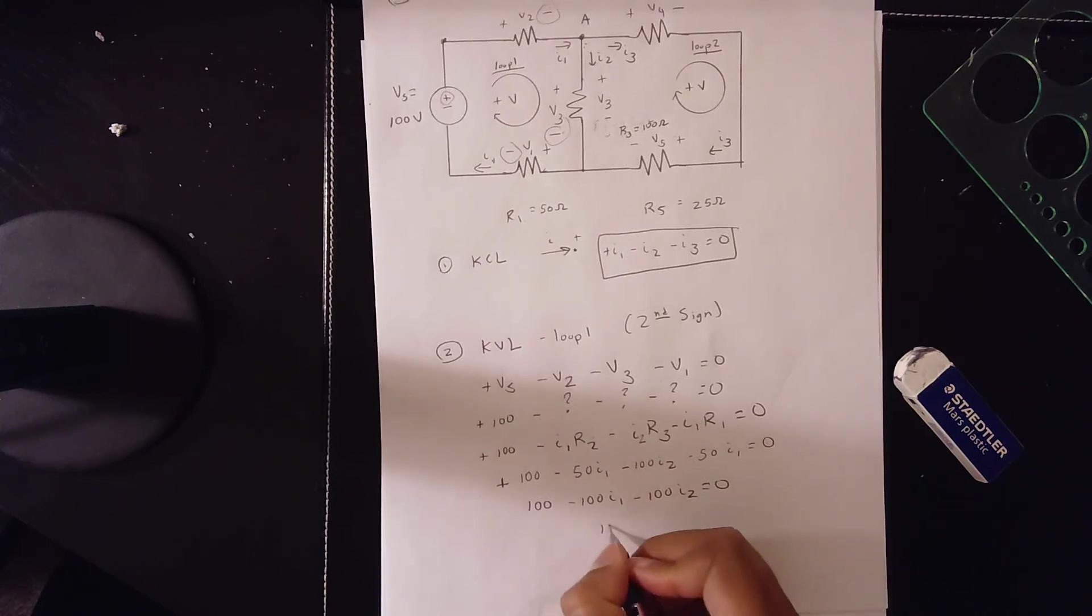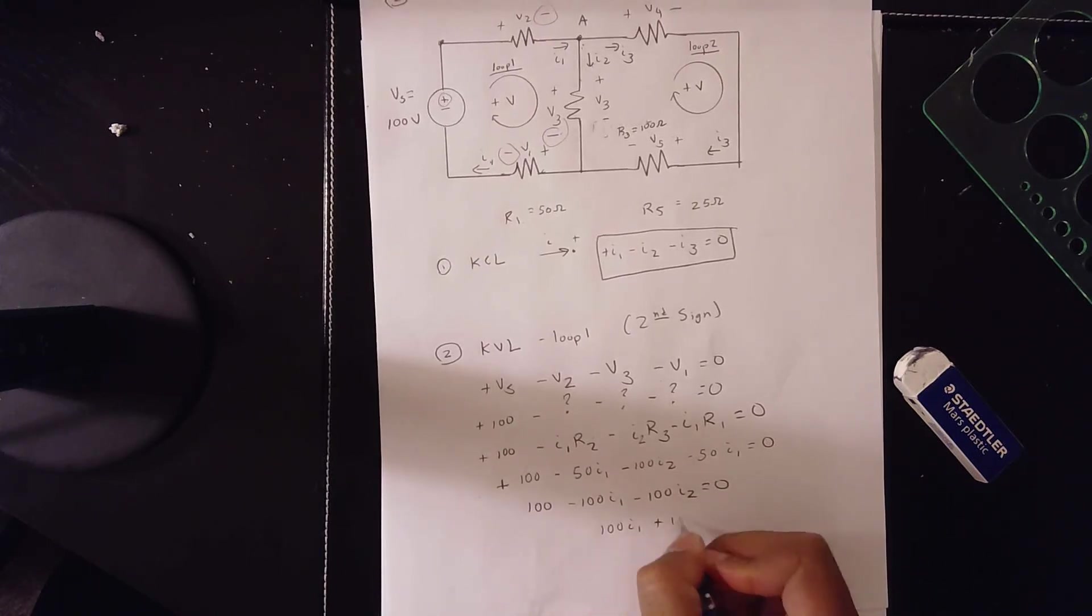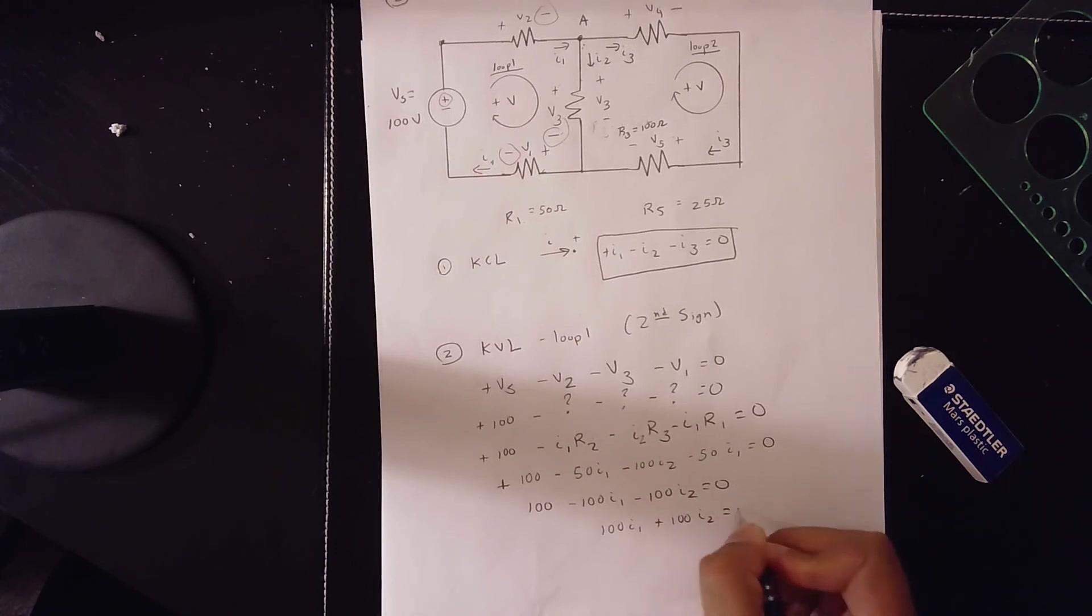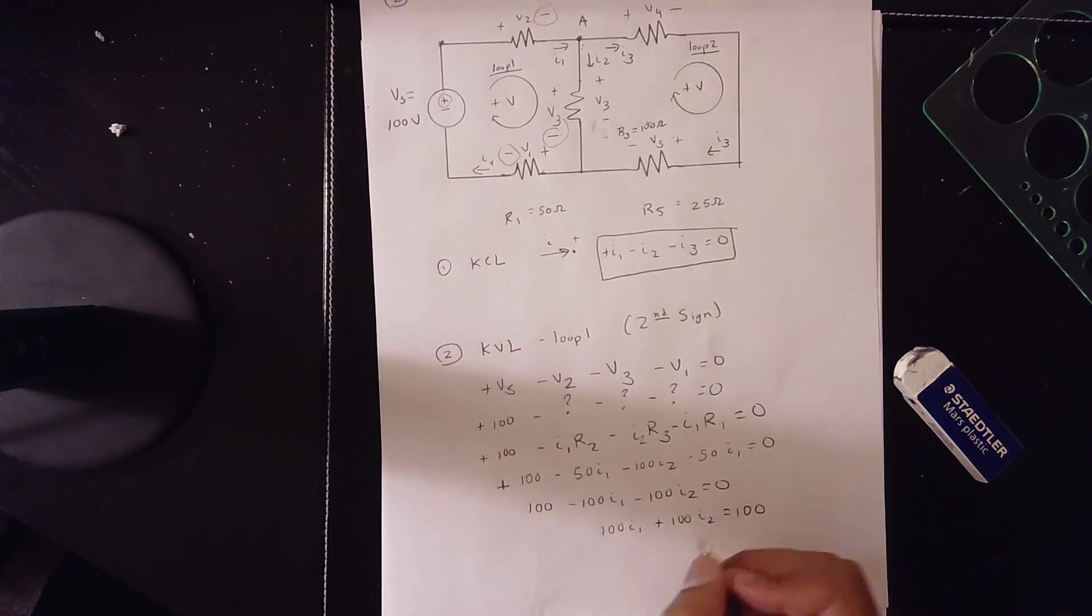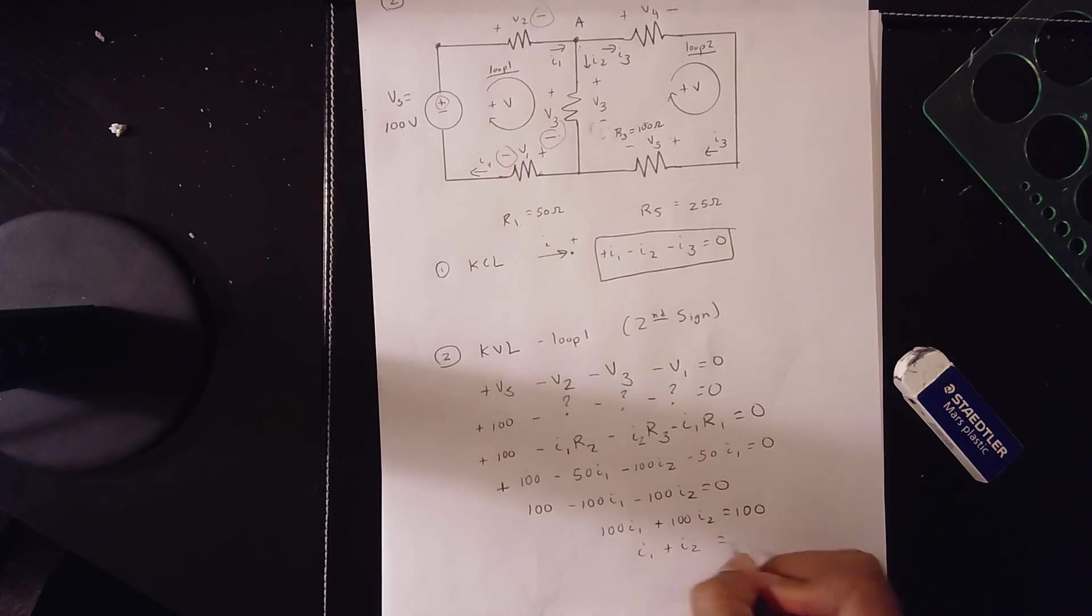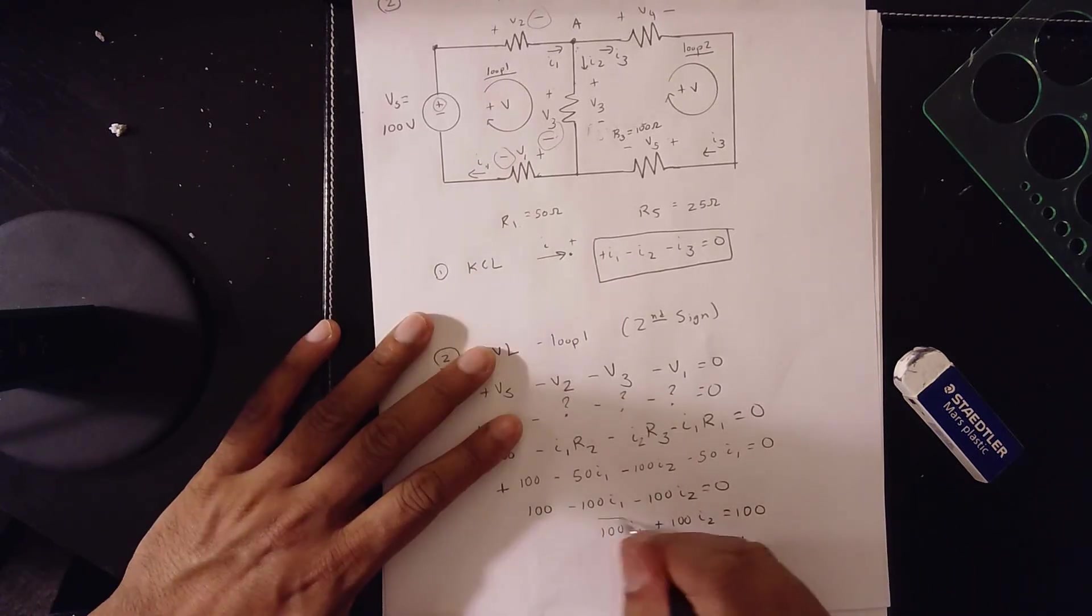Do a little math. It's 100 I1, 100 I2 is equal to 100. Or you can write I1 plus I2 is equal to 1. Both are acceptable.